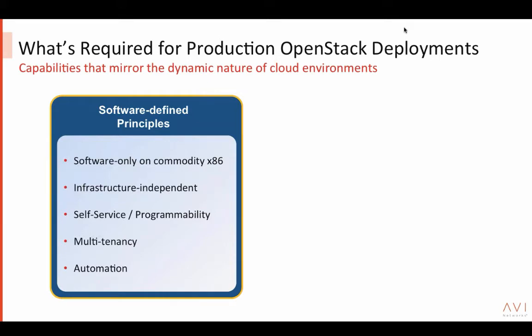Next is self-service and programmability. You want a 100% API-based solution so that you can provide self-service IT — the holy grail of private cloud — where you don't have to wait weeks to get a change propagated. You want built-in multi-tenancy that integrates with Keystone so individual business units or customers can self-service themselves. And you need 100% automation tied to those previous principles.